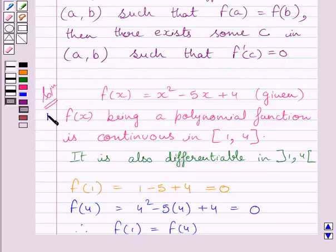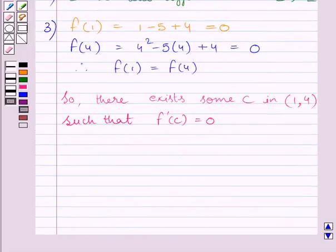So, clearly we can see all the conditions of Rolle's theorem are satisfied. So we can say there exists some c in open interval (1, 4) such that f'(c) = 0. Now, we can write, so there exists some c in open interval (1, 4) such that f'(c) = 0.